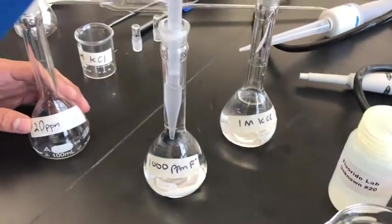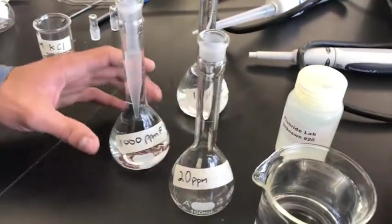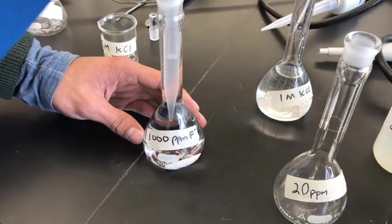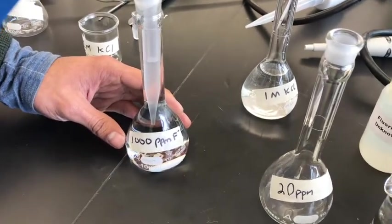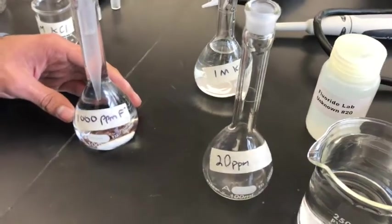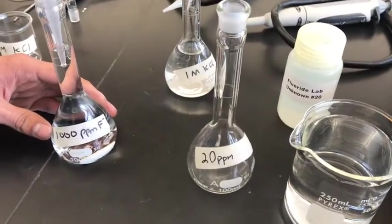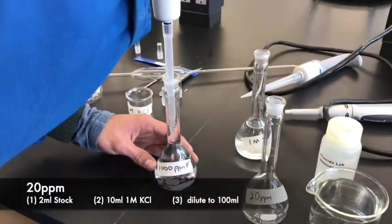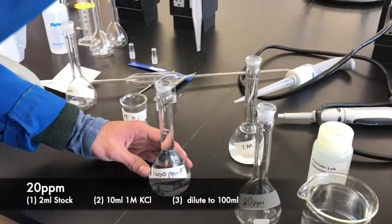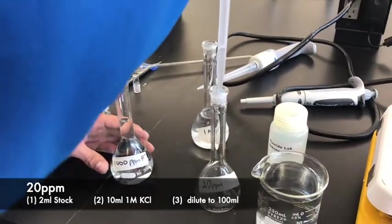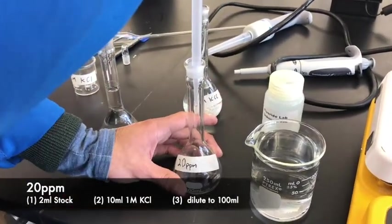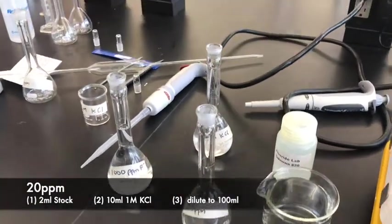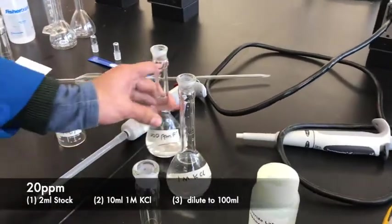Now we're going to start preparing the stock solutions for the calibration curve. So the 1000 ppm fluoride is too high to run on the instrument. The highest calibration curve concentration is going to be 20 ppm. To do that, we're going to pipet out 2ml of the 1000 ppm solution, as you see. Place it into the 100ml volumetric flask, and we once again need to add 10ml of 1 molar KCl.